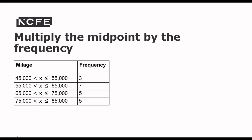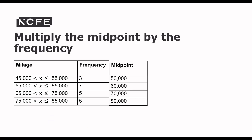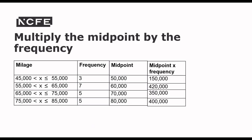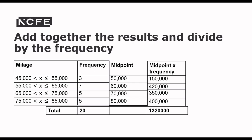Once we have the midpoint, we multiply by the frequency by adding an extra column to the chart. Learners doing paper-based assessments can draw an extra column onto any chart they have. Find the midpoint, calculate midpoint times frequency, then find the total and divide by the frequency — that's exactly the same process as before. This gives the same answer as splitting the difference between lower and upper boundaries, just a little faster.